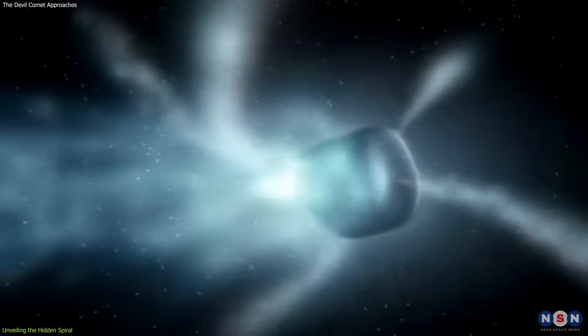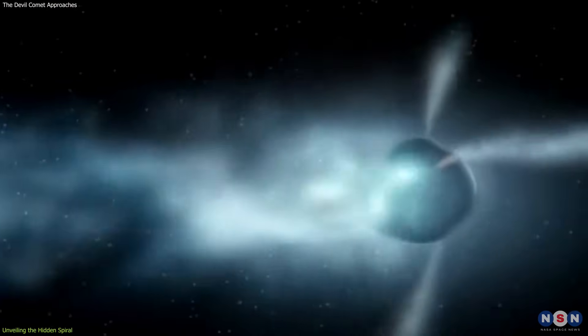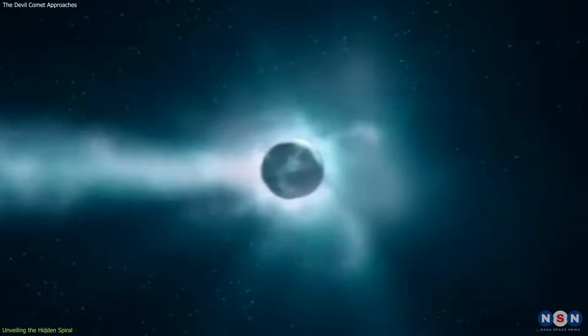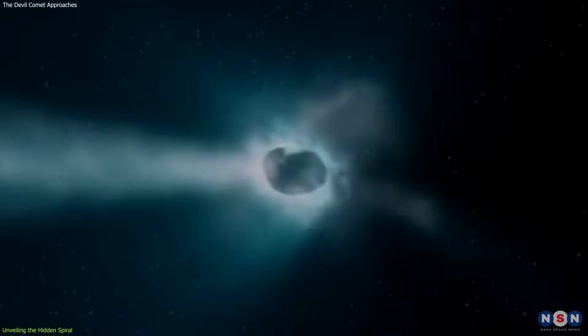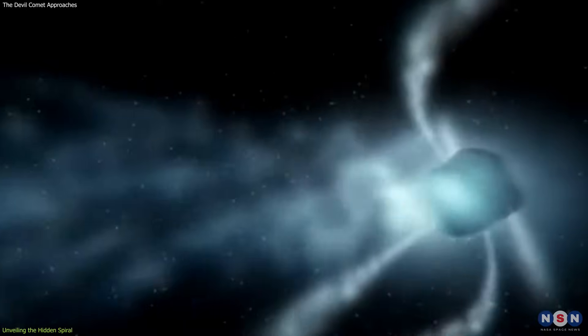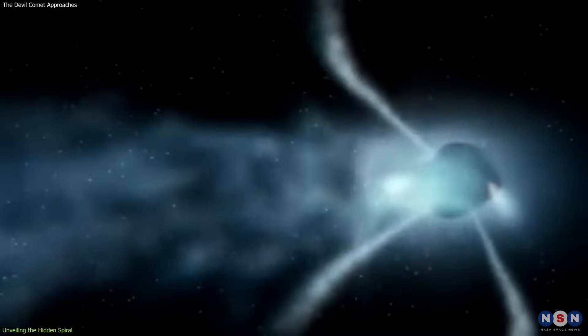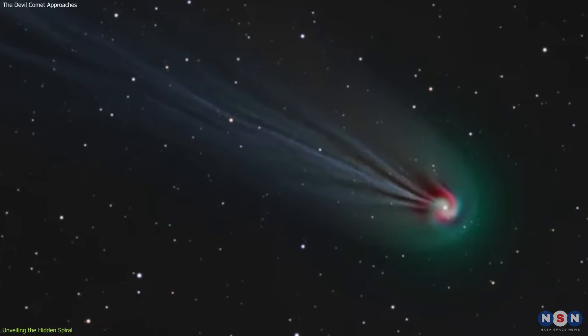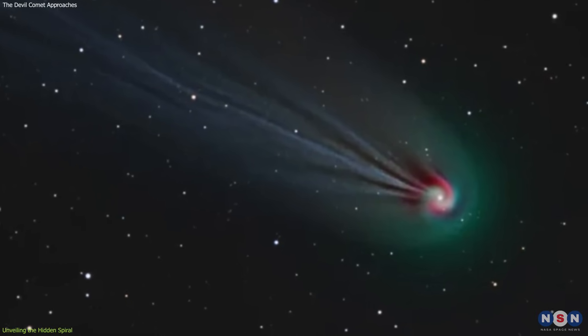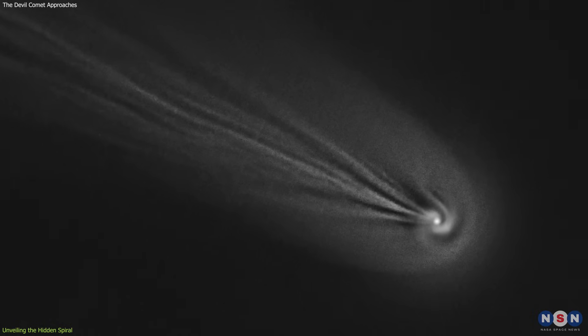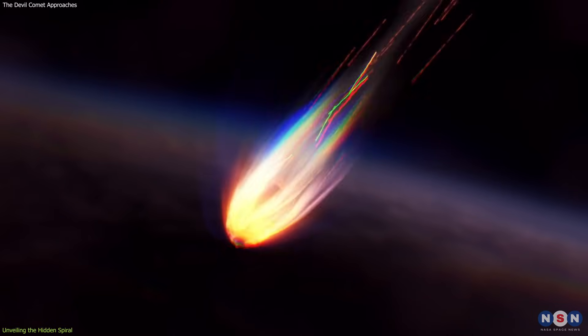The formation of this spiral is likely due to small geysers erupting on the comet's surface. These geysers, driven by the sublimation of volatile substances, eject streams of cryomagma into space. As the comet rotates, these streams are twisted into intricate swirls, creating the mesmerizing spiral observed in the images. This discovery provides a direct glimpse into the active processes shaping the comet's coma.